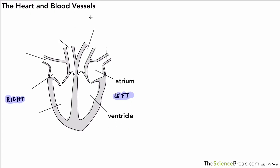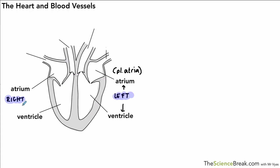Two key words: atrium and ventricle. If you can remember those two words you'll be able to do four labels quite easily. Over there we have the left atrium and the left ventricle. It's also worth remembering that atrium is one; if you've got more than one atrium you're talking about, then it's atria. On the other side we have the right atrium and right ventricle — that's the four chambers of the heart.